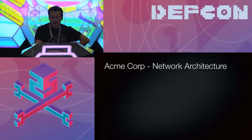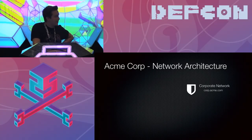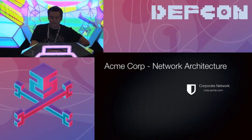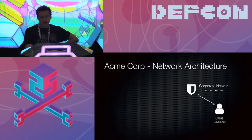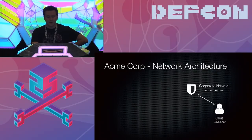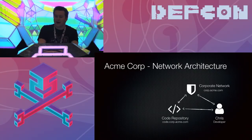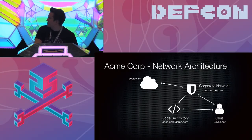We have our Acme Corp. We're going to start with an internal corporate network, which we'll refer to as corp.acme.com. We need some employees, so we're going to add a developer, Chris. Chris needs somewhere to commit all that wonderful code he writes, so we're going to add a code repository located at code.corp.acme.com.